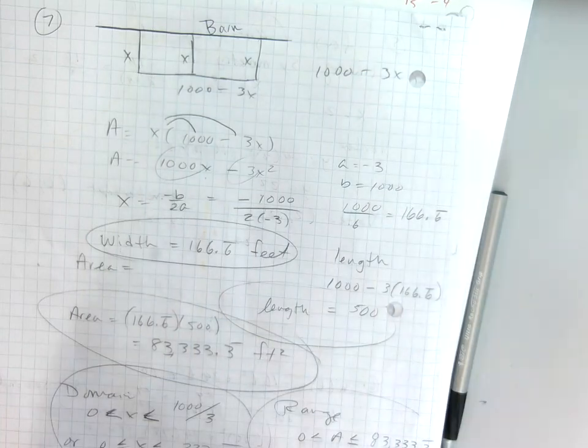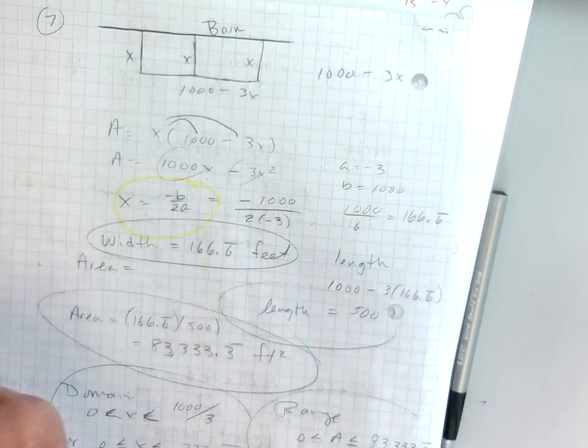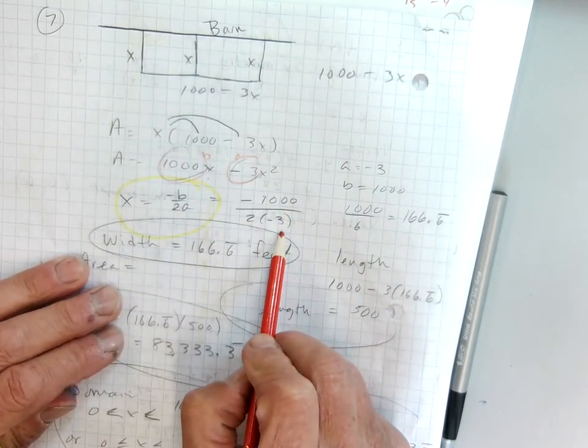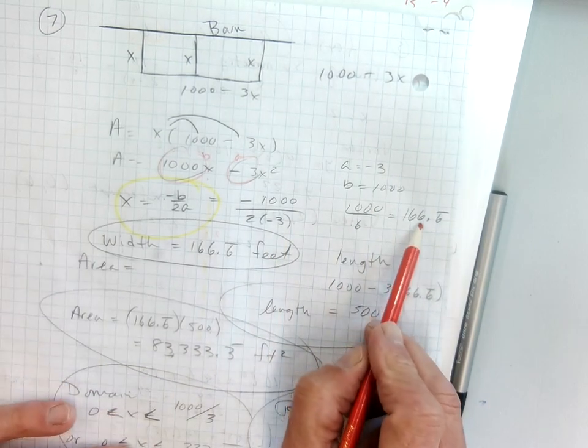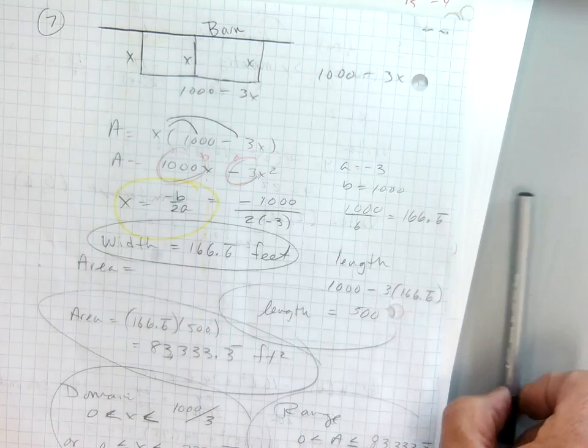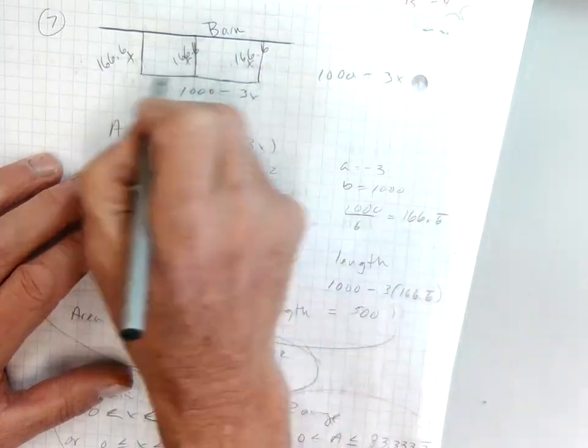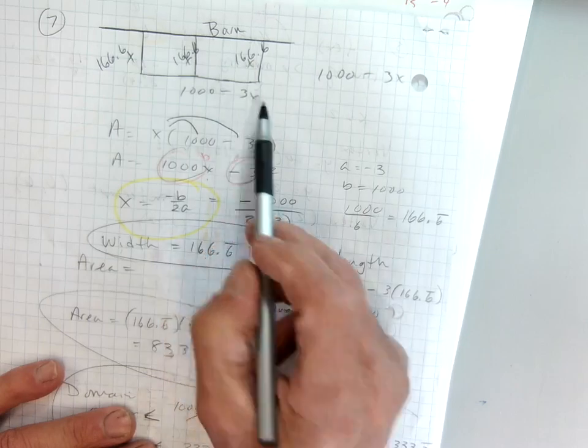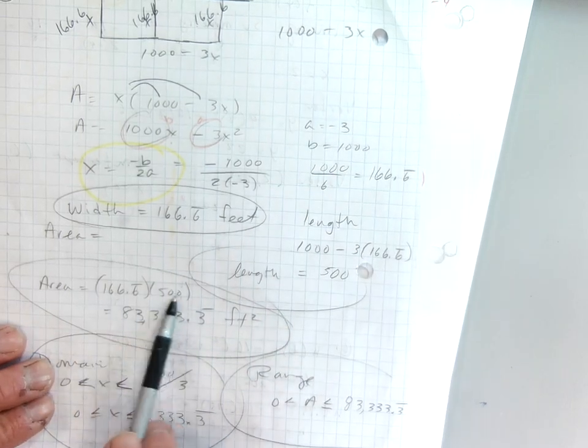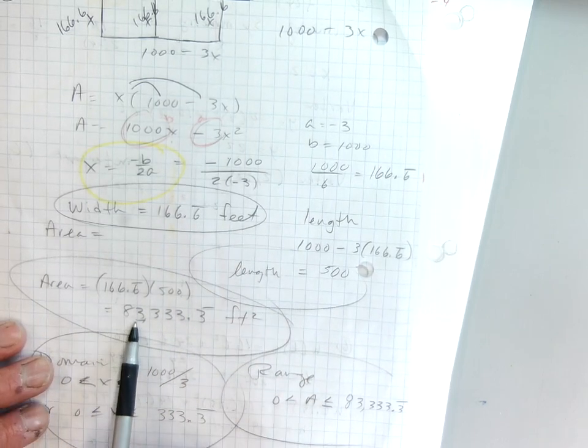If I want the maximum, again, I am using my negative b over 2a. Where a is, here's a as my negative 3, and here's b at 1,000. So I want my negative 1,000 over 2 times negative 3, which is 1,000 over 6, which is 166.6 repeating for each of these sides. Now if that's the case, then if each of these sides are 166, that would leave 500 for the length. You can plug that in here if you want to. I plugged it in, you can see my work for plugging it in for the length, I get 500. So the area then is length times width. So I multiply the length, 500 times the width, 166.6, and I get an area of 83,333.3.